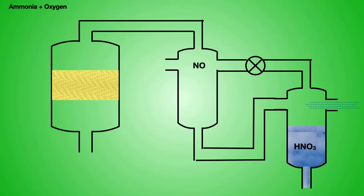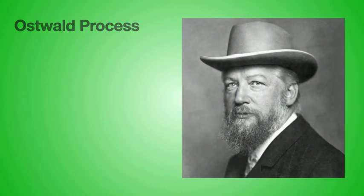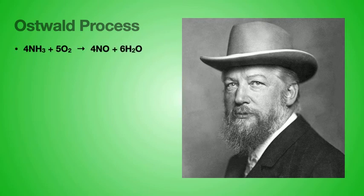That then is the process. We'll go over that now with some equations. So this is the Ostwald process. We're going to put down the equations. Incidentally, that there is Wilhelm Ostwald. He's the guy who invented it. The first stage then was the reaction of ammonia with oxygen. That looks like a scary equation. Don't worry. You're not going to have to repeat that in an exam or anything. Just know that you're reacting ammonia with oxygen.